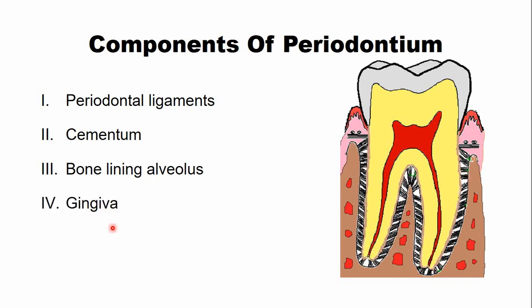The last component is the gingiva, which is the soft tissue. Of these four tissues, the cementum and the alveolar bone are the mineralized tissues, while the remaining two — the periodontal ligaments and the gingiva — are the soft tissues.